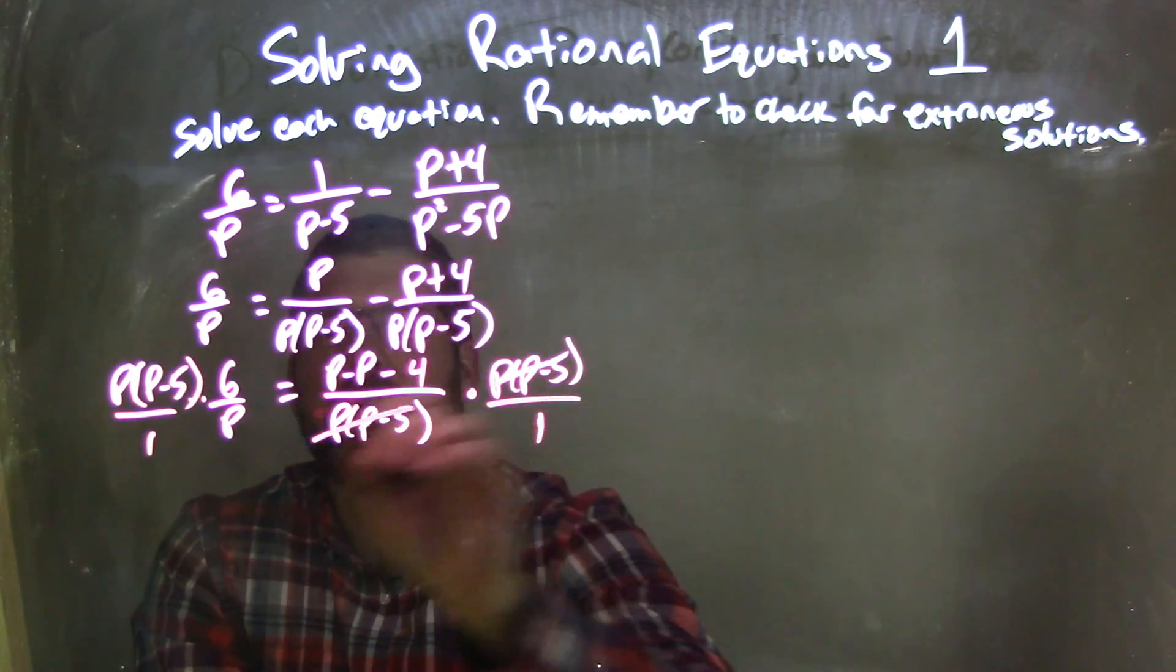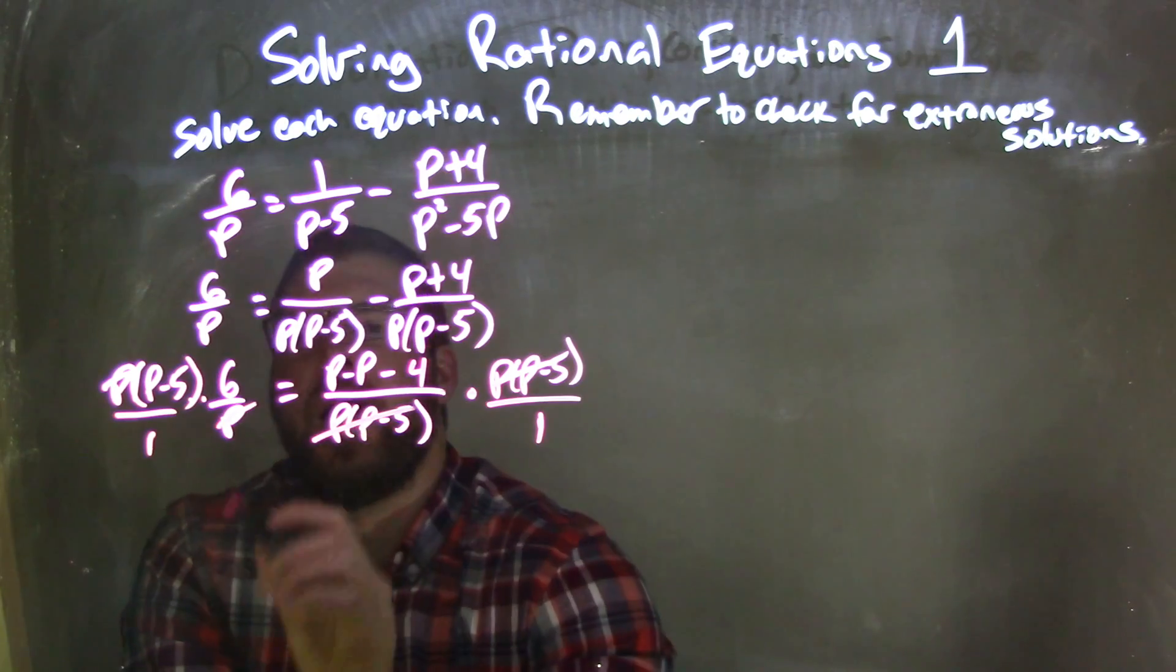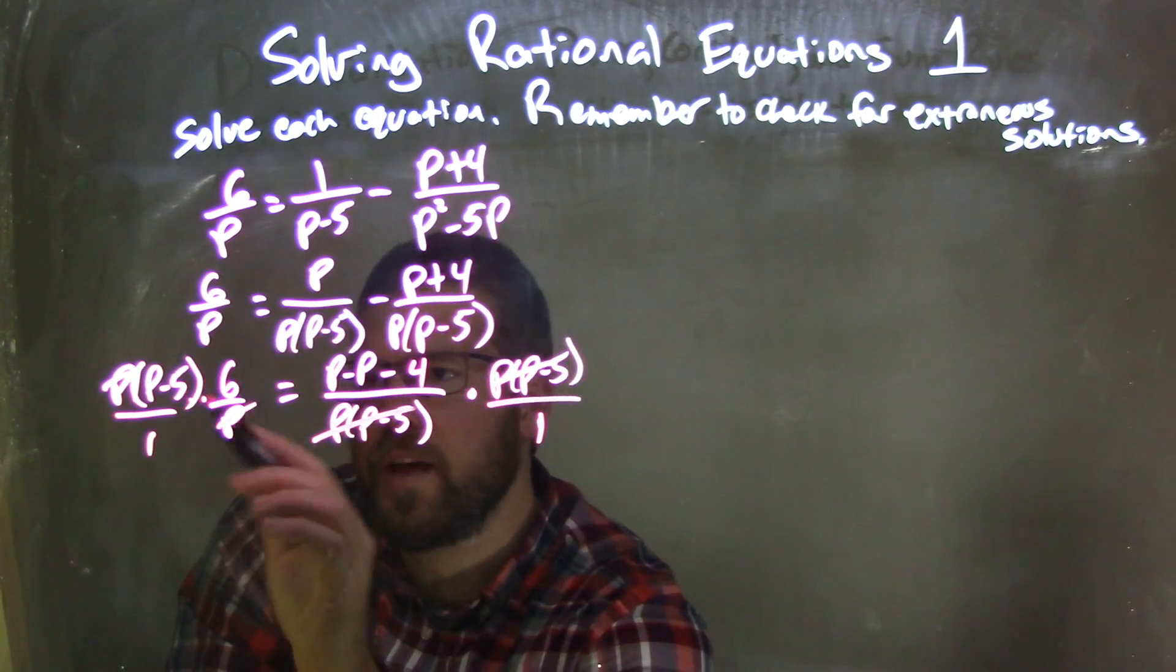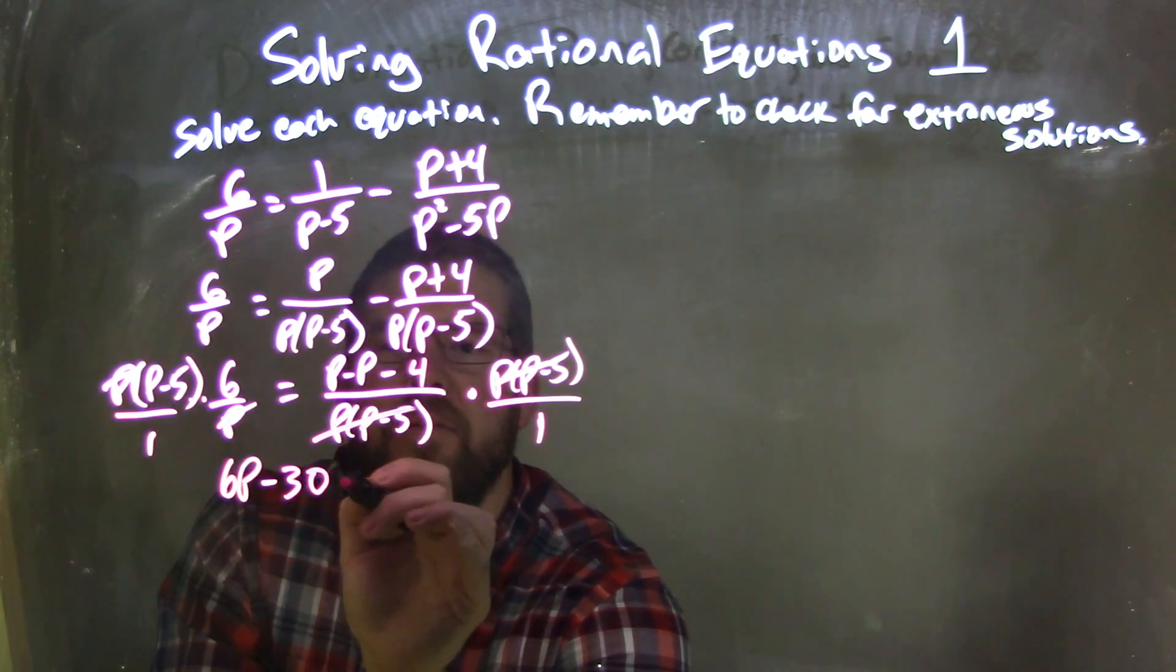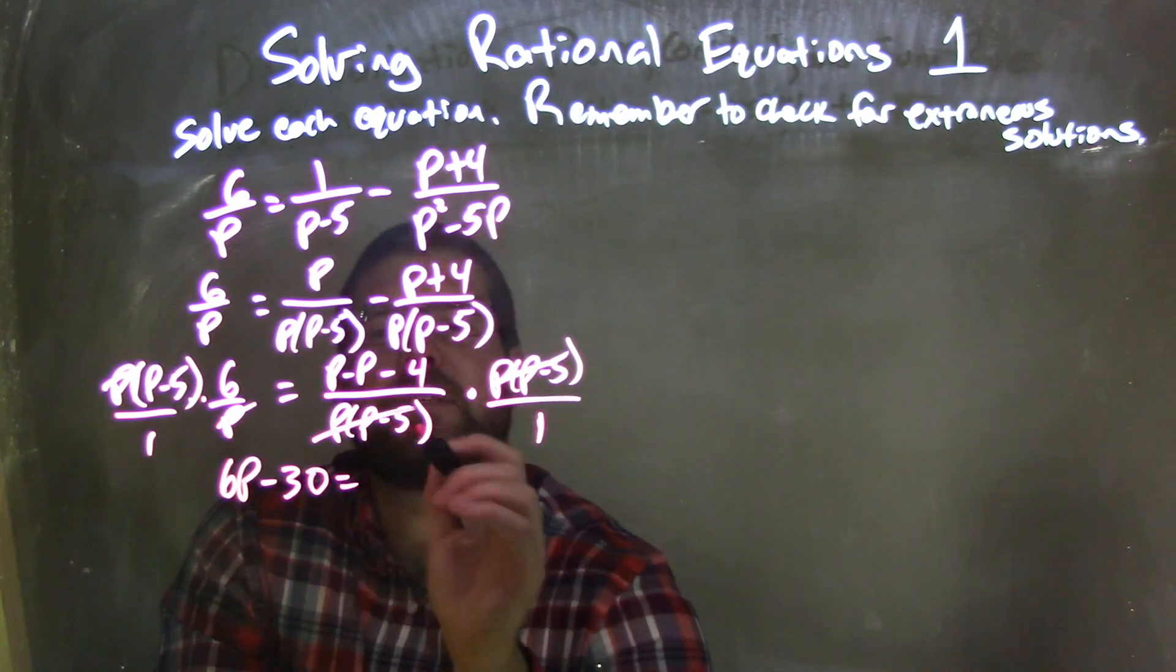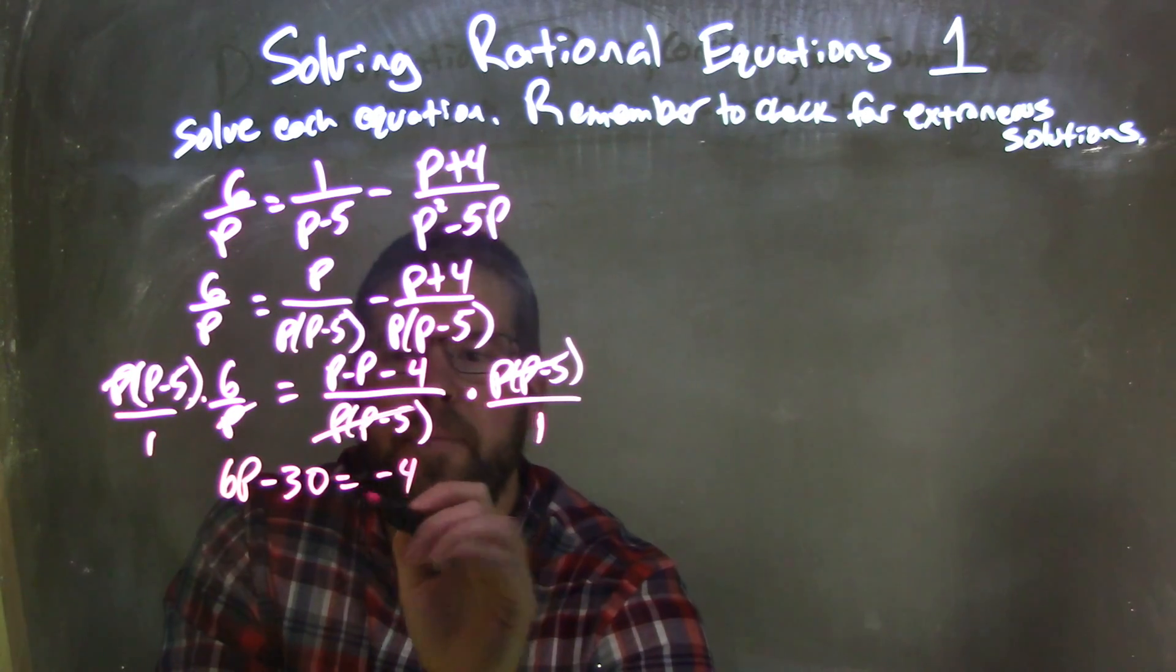That cancels out this here, cancels out this p. And if I distributed that across, 6 times p is 6p, and 6 times 5 is 30. So 6p minus 30 equals, p minus p would be 0, and we have a negative 4 right there.